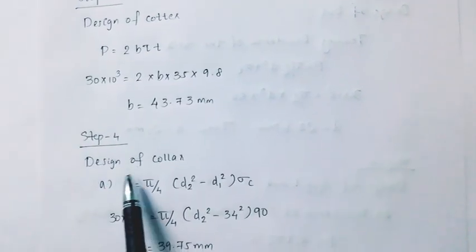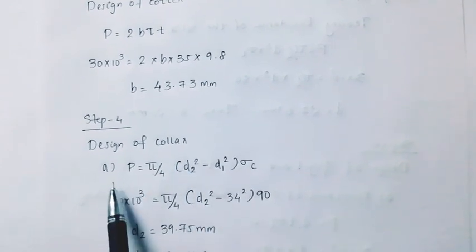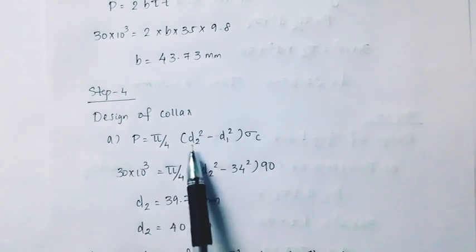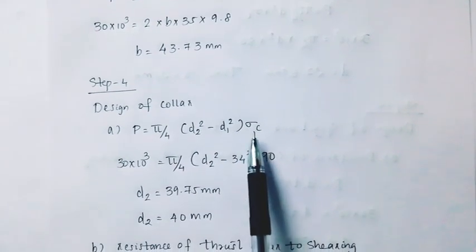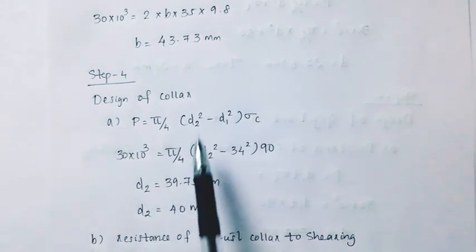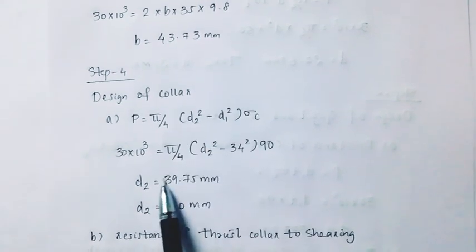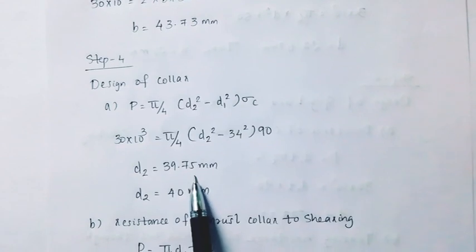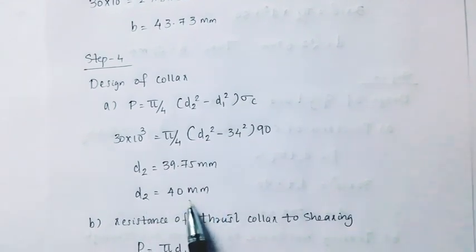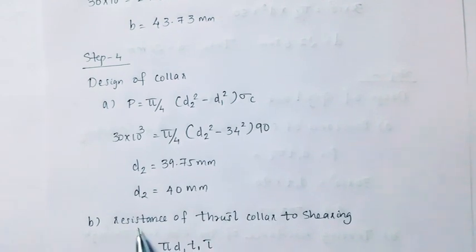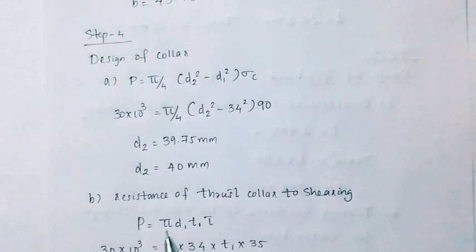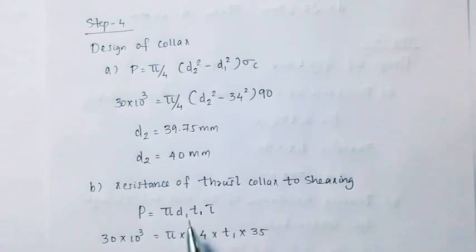Step 4: Design of collar. P equals pi by 4 into D2 squared minus D1 squared into sigma C. P equals 30 into 10 raised to 3. D2 equals 39.75 mm, take D2 equal to 40 mm. Then resistance of thrust collar to shear: P equals pi into D1 into t1 into 2 tau.